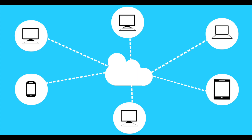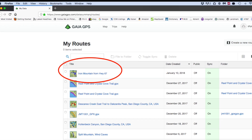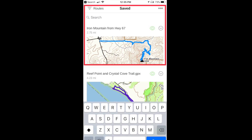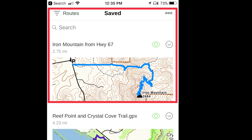Since Gaia GPS is cloud-based, wherever you plan the route — whether it's on your computer or on your phone — when you sync the Gaia GPS app on your phone, the route will then be saved in both places. It will be in your account at GaiaGPS.com and it will be in your Gaia GPS app on your phone.